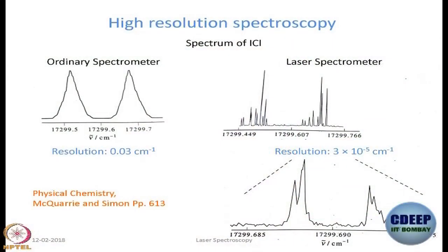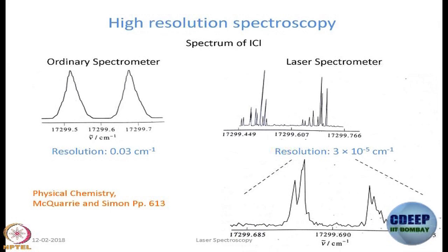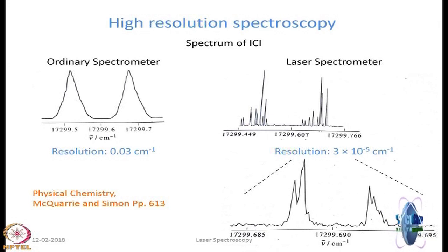Another property of lasers is monochromaticity. You can even see it here qualitatively - it is green and not white. But when we say monochromaticity it actually goes way beyond just saying that it is green or blue or red. In the example we discuss in the next few minutes, that is what we will try to emphasize - how monochromatic lasers can be.